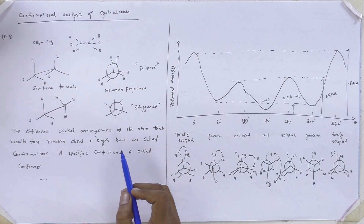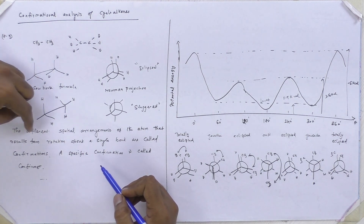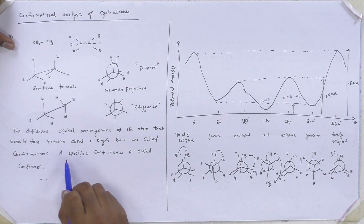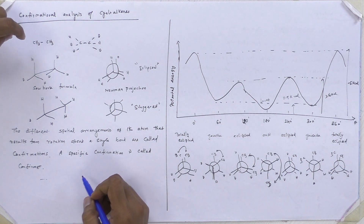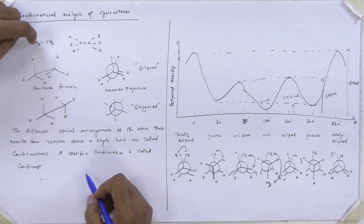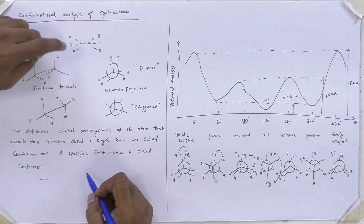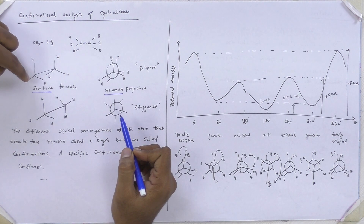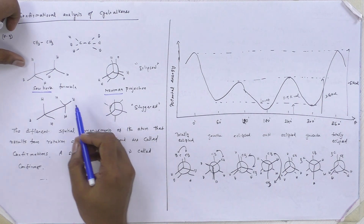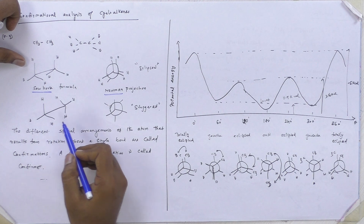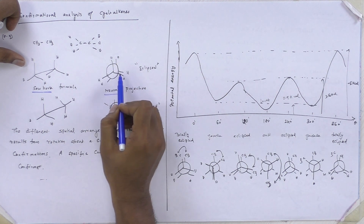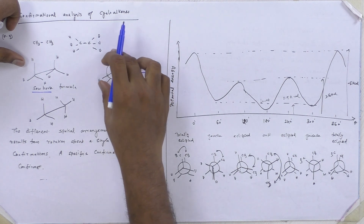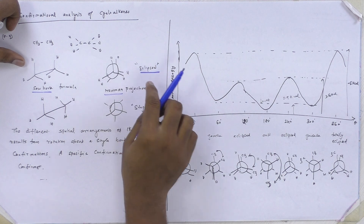The next topic is conformational analysis of cycloalkanes. What do you mean by conformational analysis? The different spatial arrangements of atoms that result from rotation about a single bond are called conformations. A specific conformation is called a conformer. Let us start with cyclopropane. This is the molecular structure of cyclopropane. We can also write this kind of formula — a Sawhorse formula and a Newman projection formula. This is the eclipsed form with CH3 and CH3.